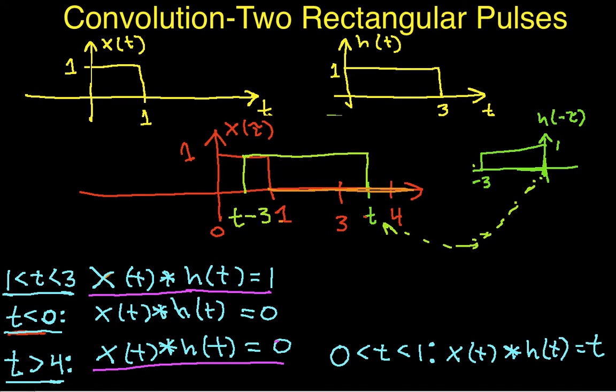Everywhere that X is 0, the product is 0. And it turns out then that the only place the product is not 0 is right here from T minus 3 to 1. So basically, I'm going to have an area that is going to have a width of 1 minus T minus 3. That's the width of this guy over here. Because again, it goes from 1 over to T minus 3. And the height is going to be 1. I multiply this by the height, and doing a little bit of algebra, I get that this is equal to 4 minus T.